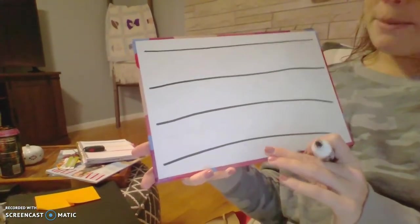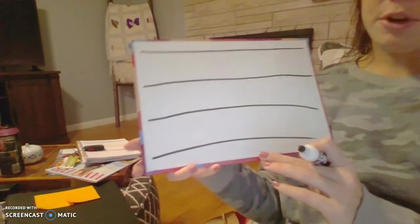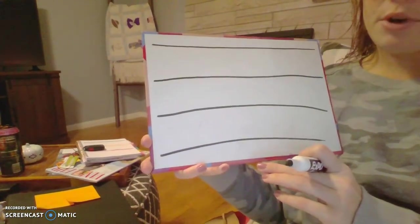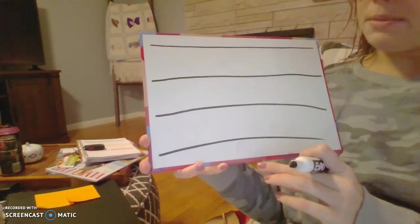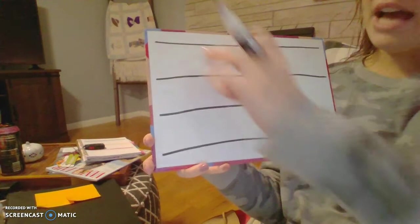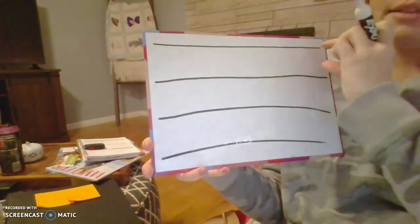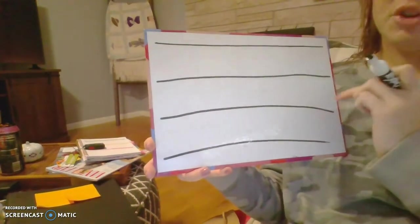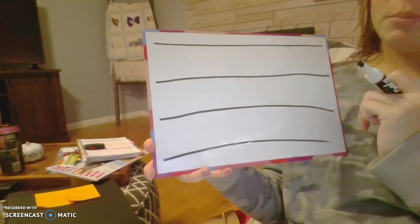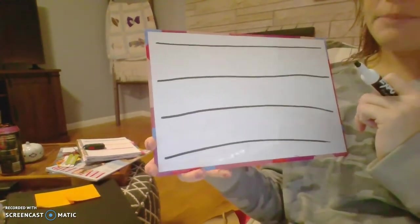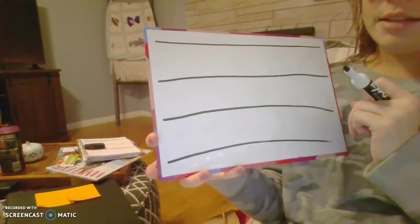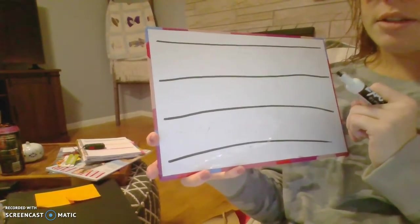So on your paper, whatever paper you have — if it's in a notebook, a composition notebook, or handwriting paper — you should have lines on your paper. They might be blue or black or dotted, but here's how you use the lines to help you write your letters.